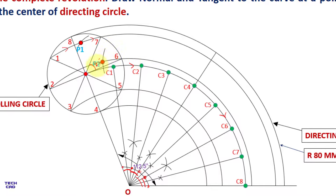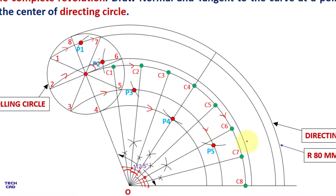Put the compass at c2 and mark an arc from point 2 of the rolling circle; name it p2. At c3, mark an arc from point 3; name it p3. At c4, mark an arc from point 4; name it p4. At c5, mark an arc from point 5; name it p5. At c6, mark an arc; name it p6. At c7, mark an arc; name it p7.